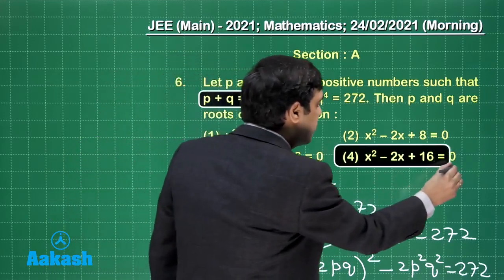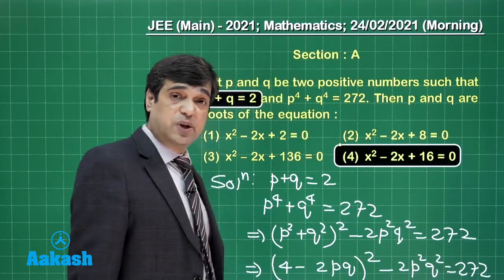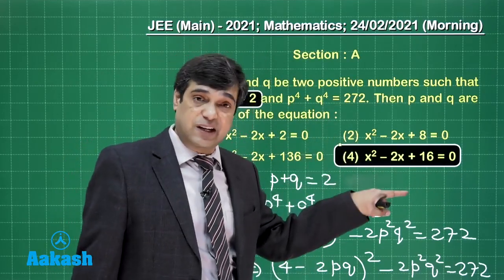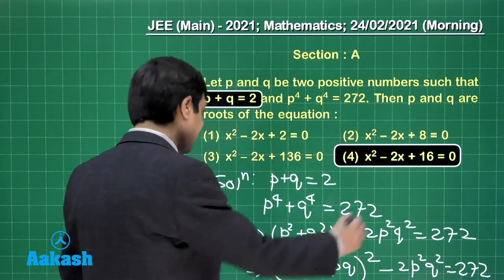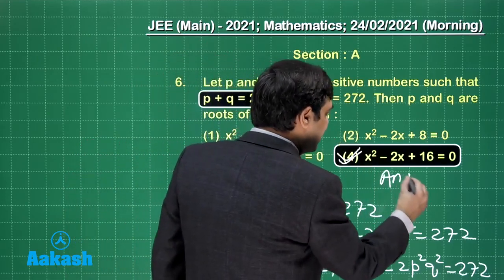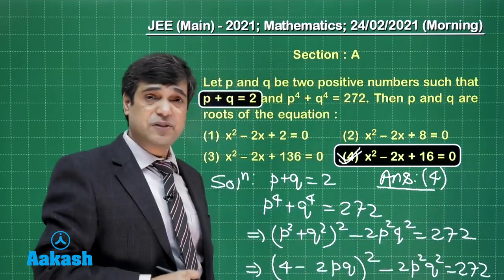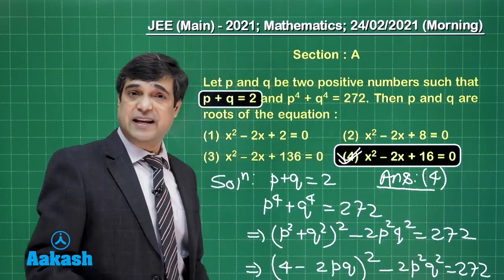Clearly x² minus 2x plus 16 equals 0 or x² minus 2x minus 8 equals 0 which is not given here in any of the options. So yes the correct answer from the given one is option number 4. I am sure this question is also clear. Let us take up the next one.